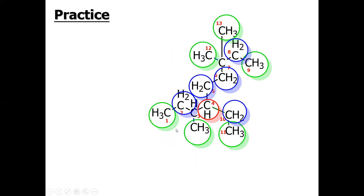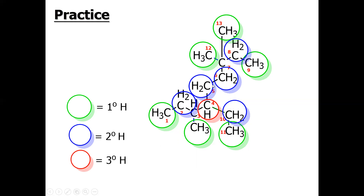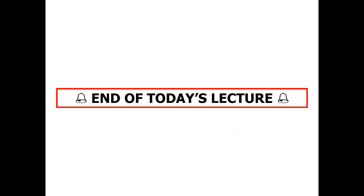I will show you with circles. You can see the green ones are the primary hydrogens because they are bonded with one-degree carbon. The blue ones are the secondary hydrogens because they are bonded with secondary carbon. The red one is the three-degree hydrogen because it is bonded with three-degree carbon. Carbon number seven is not marked because there is no hydrogen on it. That's how you can easily classify one-degree, two-degree, and three-degree hydrogen. That's all for today's lecture. Hopefully we will do some more interesting lectures in our upcoming online series. See you.